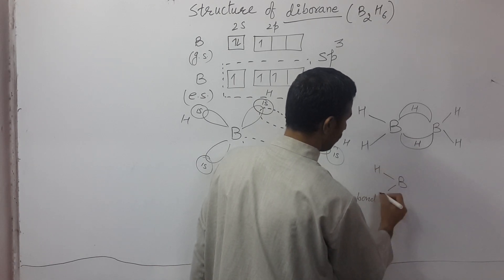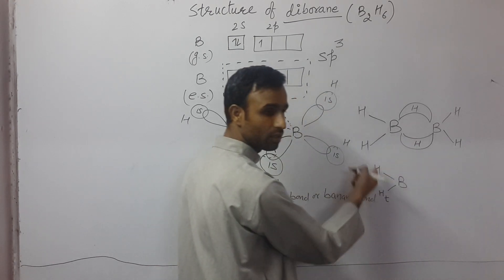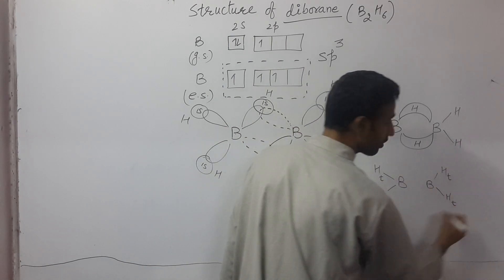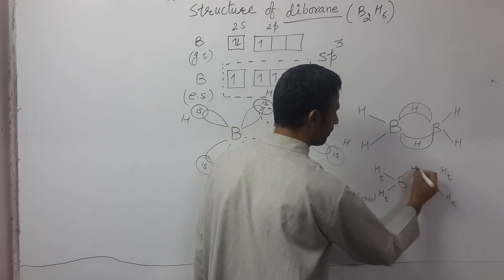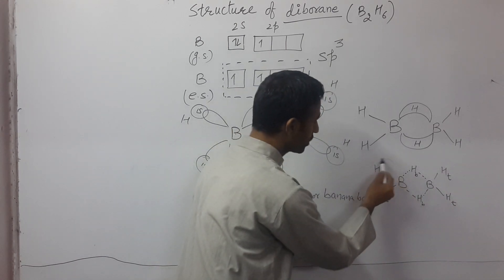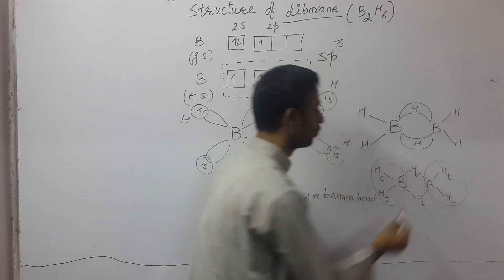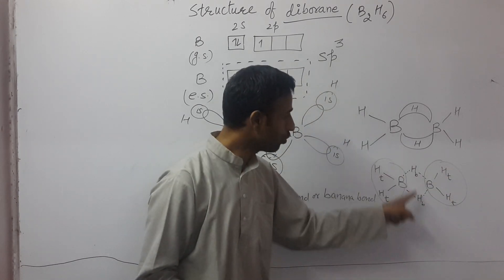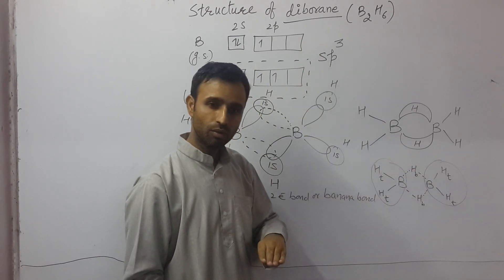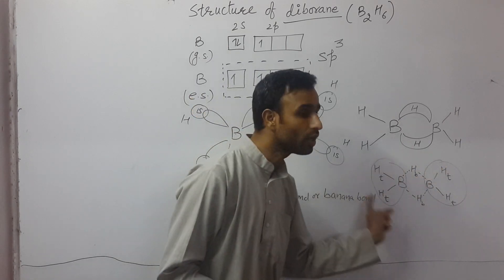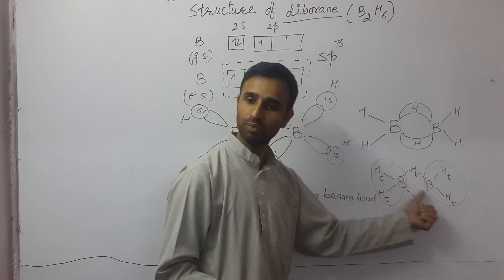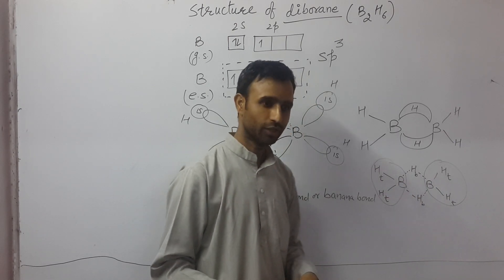These two hydrogens are known as terminal hydrogens. And in between them, these are called bridging hydrogens. Now this BH2, they are in the same plane. But these two bridging hydrogens, one is above the plane, other is below the plane. So this is overall a non-planar molecule in which each boron is sp3 hybridized.